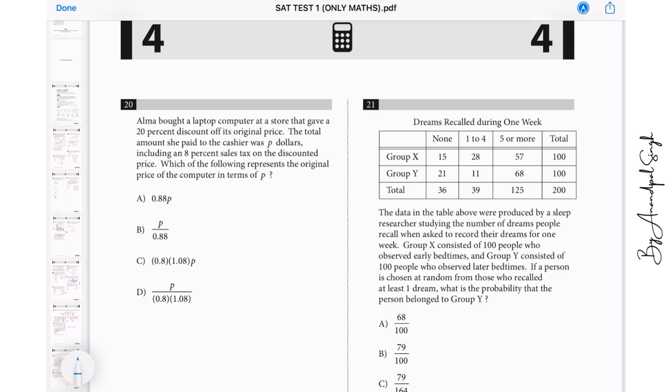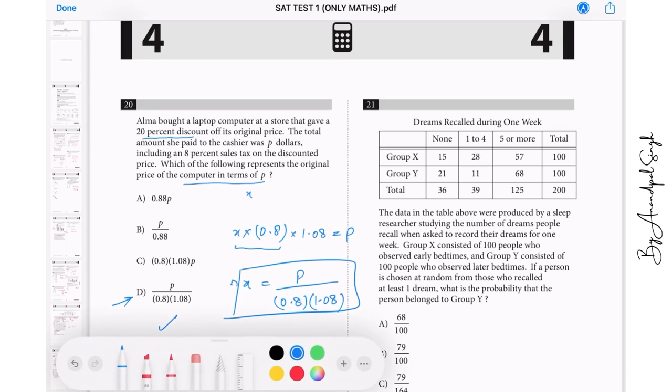Let us do one more question. Alma bought a laptop computer at a store that gave a 20% discount of the original price. The total amount she pays to the cashier is P dollars including an 8% sales tax. So let us suppose that the original price of the computer is x. So x times, she's provided a discount of 20%, means she will pay just 80% of the amount, and then over this amount she is paying 8% of sales tax, means this into 1.08 and this is equals to P. It means what is x? It is P divided by 0.8 divided by 1.08, and that is the answer. It means option number D.